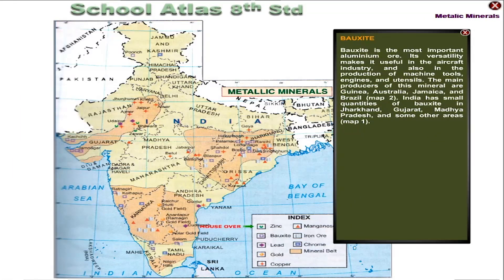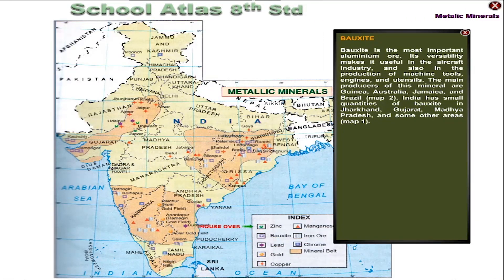Bauxite. Bauxite is the most important aluminium ore. Its versatility makes it useful in the aircraft industry and also in the production of machine tools, engines and utensils. The main producers of this mineral are Kenya, Australia, Jamaica and Brazil. India has small quantities of bauxite in Jharkhand, Gujarat, Madhya Pradesh and some other areas.